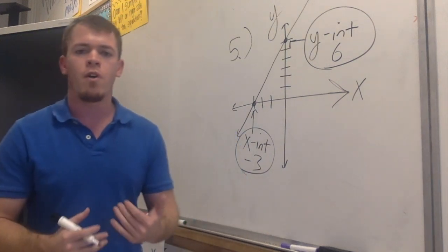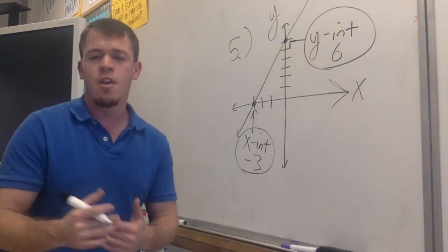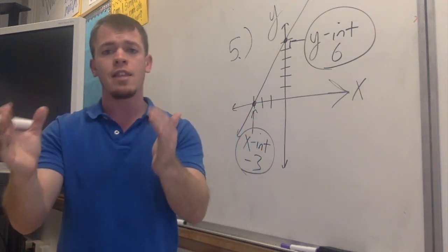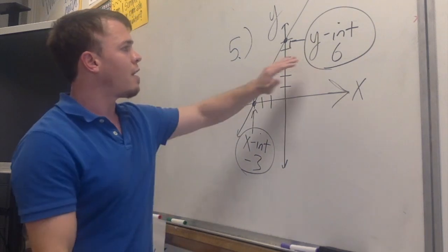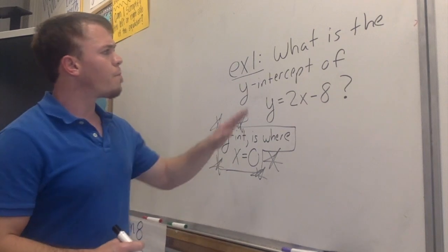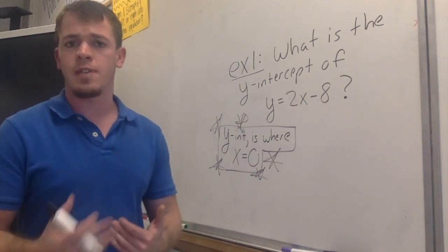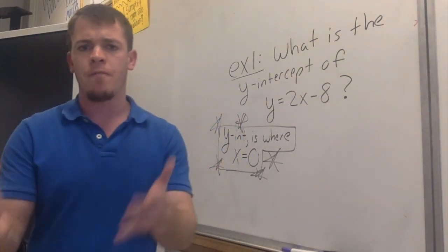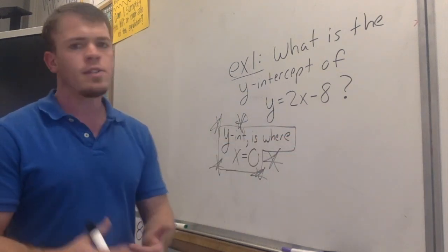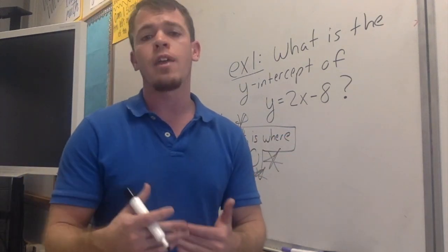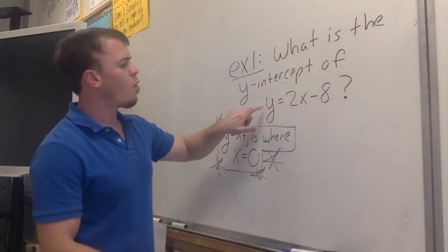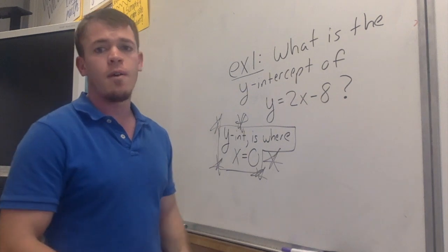Now we're going to move on to the next part of the lesson, because I want you to be able to see a function and find the y- or x-intercept purely without the graph. Here's our very first example of looking at a function without the graph. What is the y-intercept of y equals 2x minus 8?